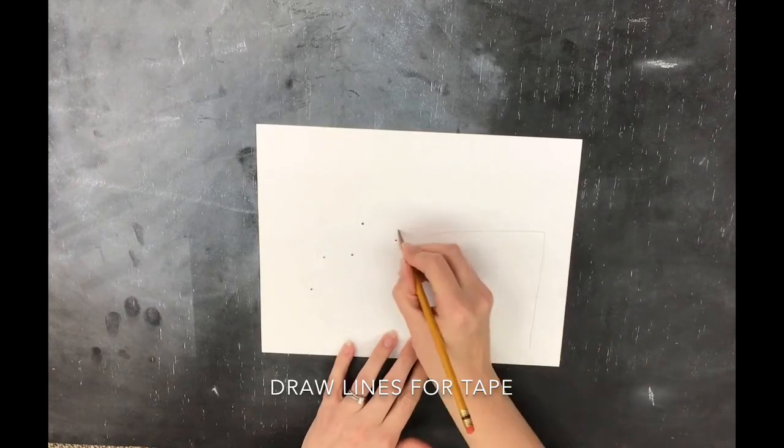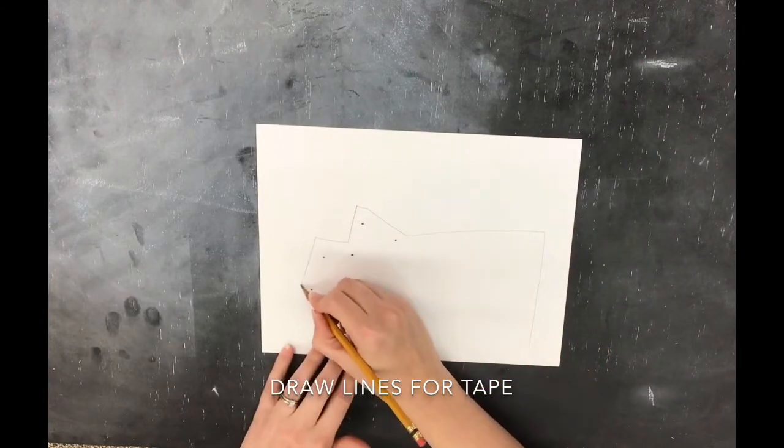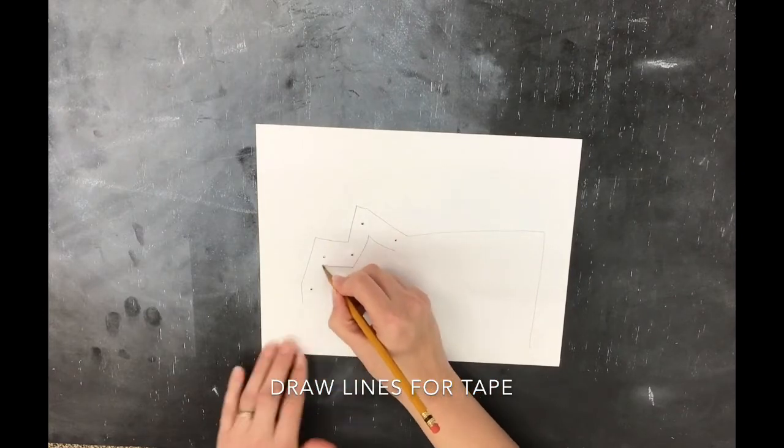Now we are going to draw the lines that mark where our copper tape is going to be placed. This is also the path of electricity through our project.